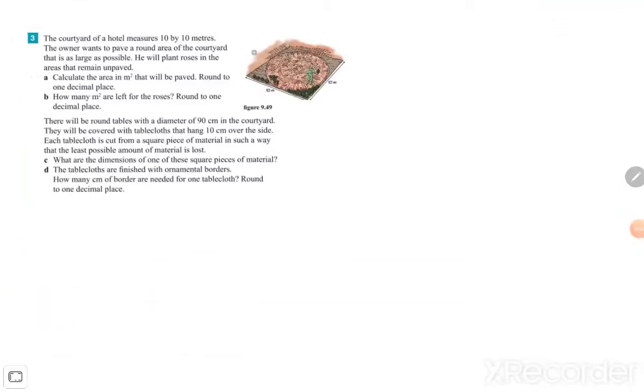All right ladies and gentlemen, good afternoon everybody. Here's a new video about exercise three of the combined exercises. They talk about the courtyard of a hotel measured 10 by 10 meters. The owner wants to pave a round area of the courtyard that is as large as possible. He will plant roses in the areas that remain unpaved.